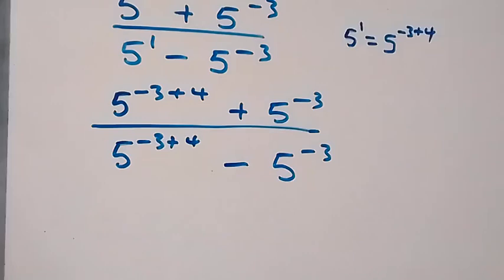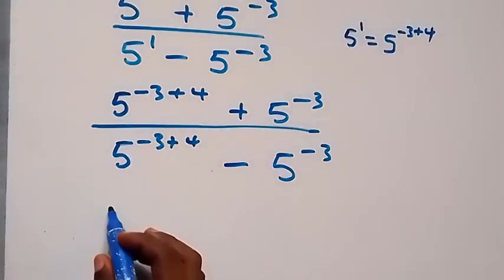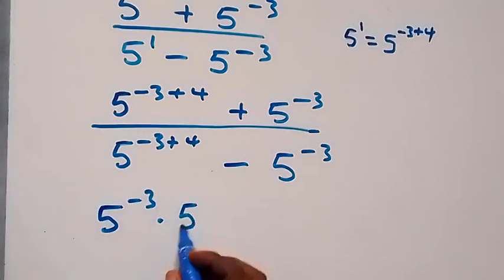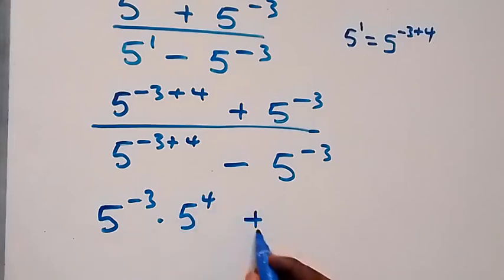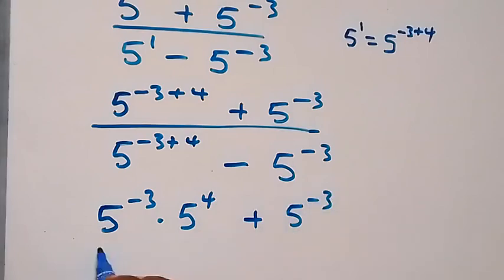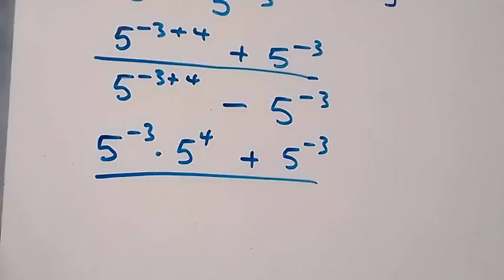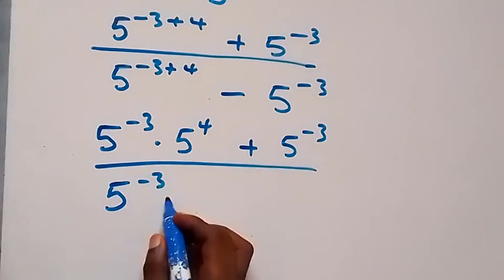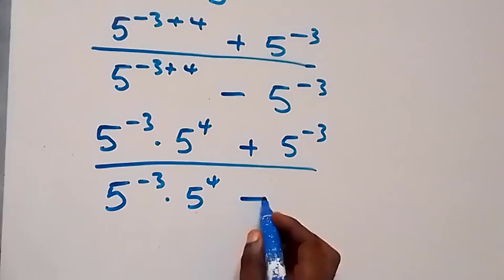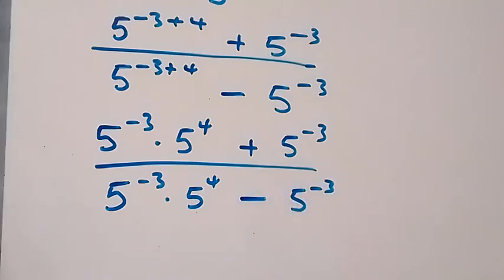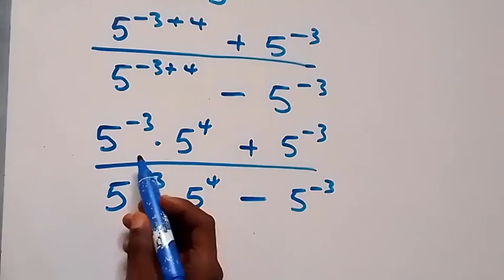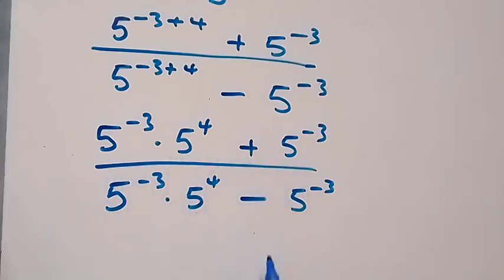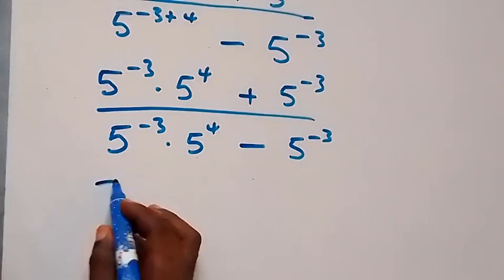From the law of indices, here we can separate this as 5 raised to power minus 3 times 5 raised to power 4, then plus 5 raised to power minus 3, divided by — also in the same way — 5 raised to power minus 3 times 5 raised to power 4, then minus 5 raised to power minus 3.